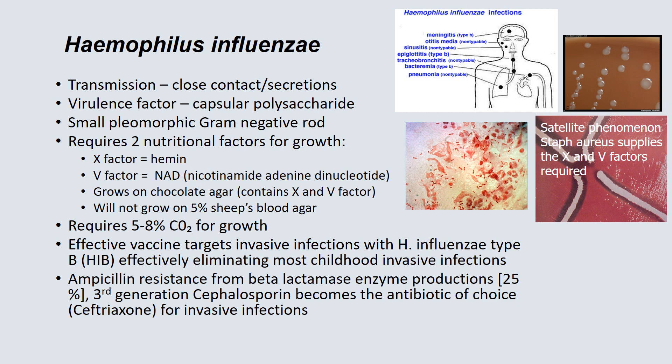We are fortunate to have an effective vaccine targeting invasive infections with Haemophilus influenzae type B, which effectively eliminates most childhood invasive infections. Ampicillin resistance is a problem in H. flu — about 25% of organisms produce a beta-lactamase enzyme, making ampicillin ineffective. Third-generation cephalosporins become the most effective group of antibiotics for invasive infections.